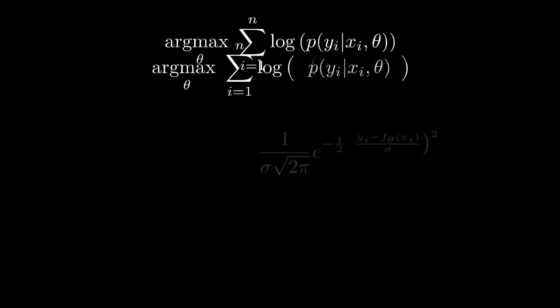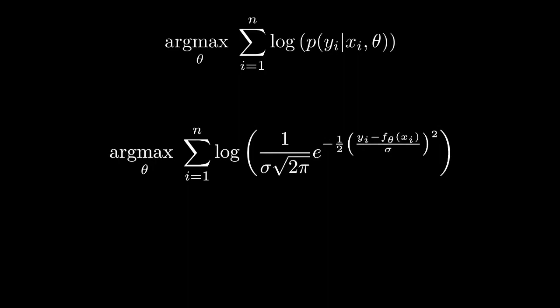Given the first term in our optimization problem, we will now make the assumption that our errors are normal and plug in the normal PDF as discussed earlier. Using the properties of the logarithm, we will separate out the coefficient into its own term.